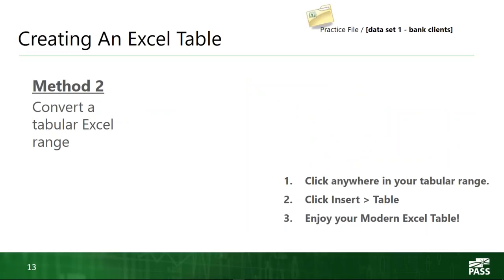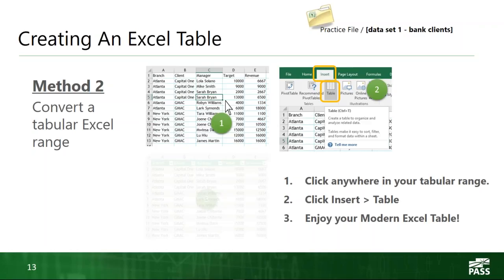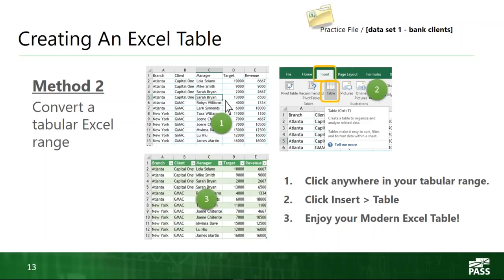The second method: let's say you don't have the ability to import from an external system. As long as you start with a tabular data set — neatly organized rows and columns, a header row at the top where each header cell is a descriptive title that uniquely identifies the type of data underneath it — it's really easy to create. All you have to do is go to your ribbon, click Insert Table, and that's it. Enjoy your modern Excel table — you're ready to dive into all these amazing features in just a couple of clicks.